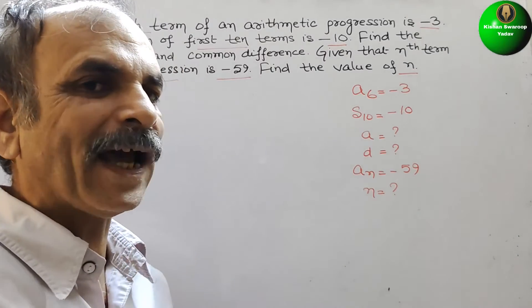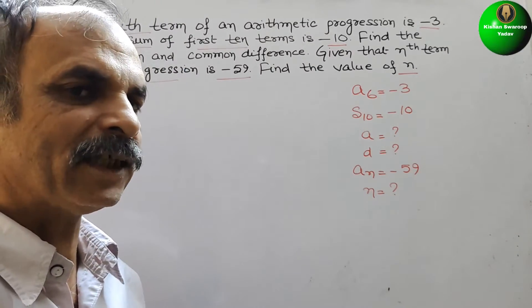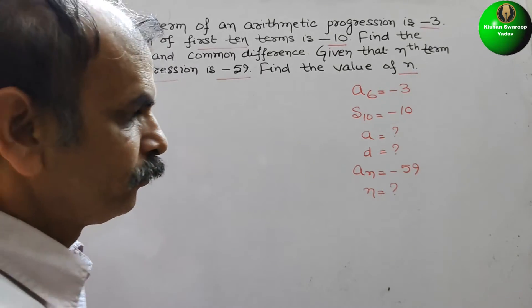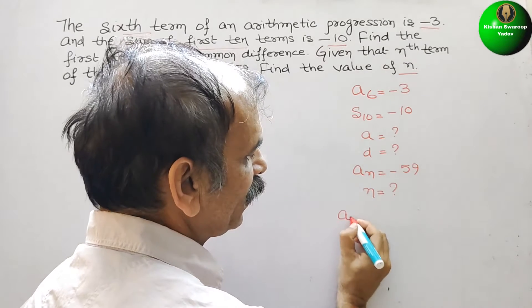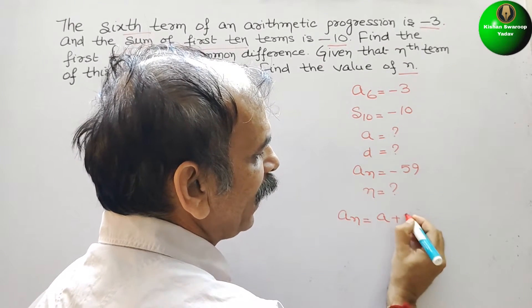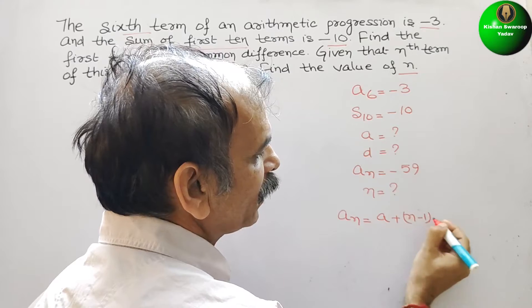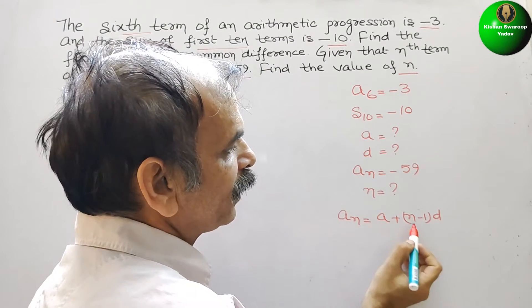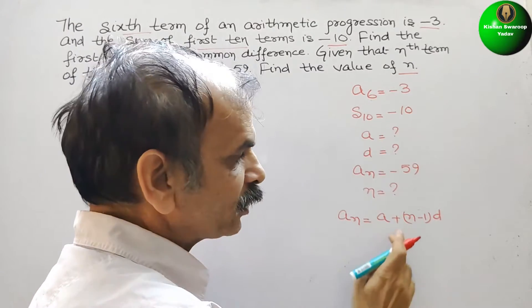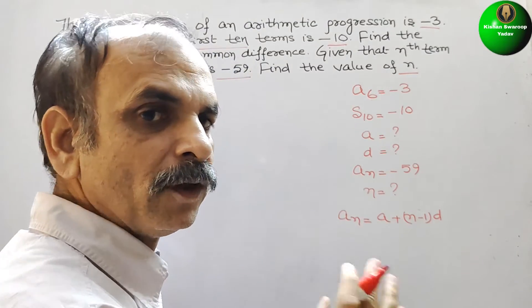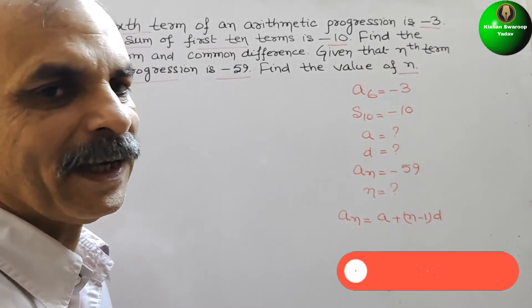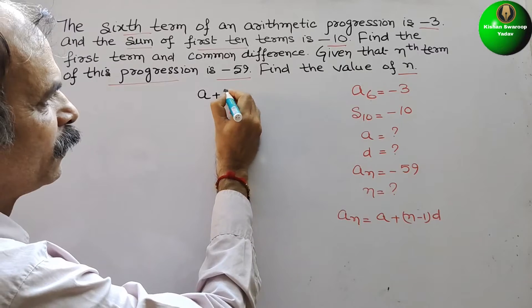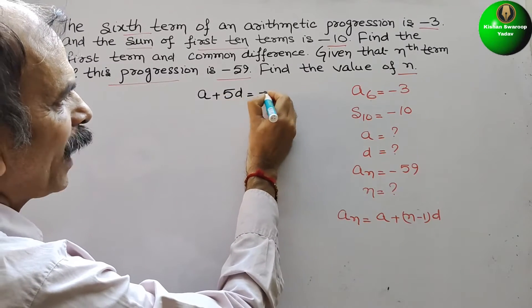Now, a6 — how do we write a6? That is nothing but a plus 5d. The formula is: an is equal to a plus (n minus 1) into d. Here n is 6, so 6 minus 1 is 5. So we can write a plus 5d is equal to minus 3.